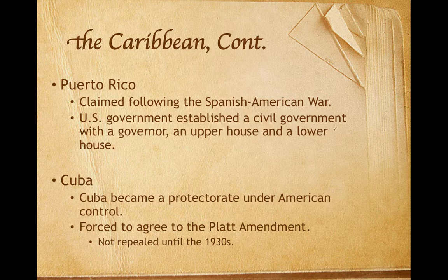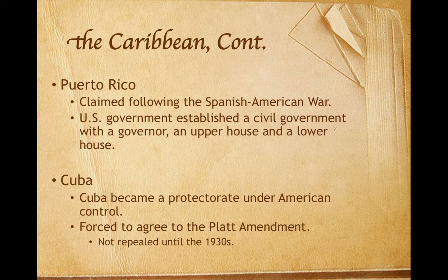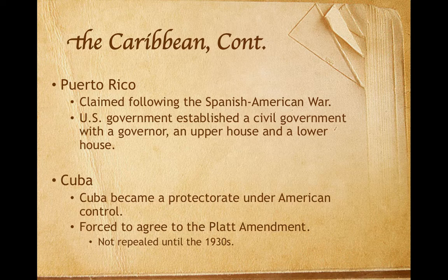Puerto Rico is a small island in the Caribbean Sea, 100 miles long by 35 miles wide, and it became an American possession after the Spanish-American War. In May of 1900, the U.S. government established a civil government with a governor, an upper house, and a lower house. Cuba is the largest island in the Caribbean. Congress had passed a resolution before the Spanish-American War not to annex Cuba; nevertheless, after the war, Cuba became a protectorate under American control. U.S. forces remained on the island and American businesses invested heavily in Cuba. Cubans were forced to agree to the Platt Amendment, which gave the United States the right to intervene in Cuban affairs at any time, and the Platt Amendment was not repealed until the 1930s.